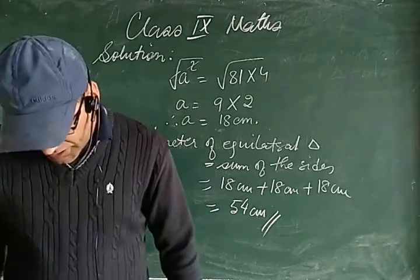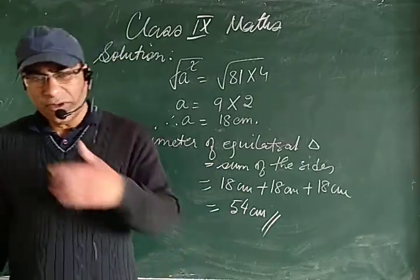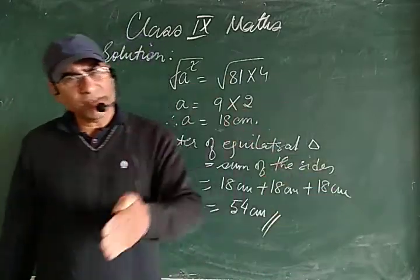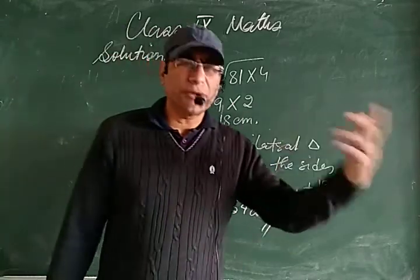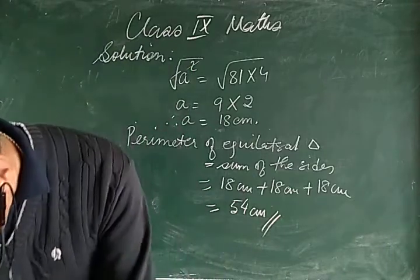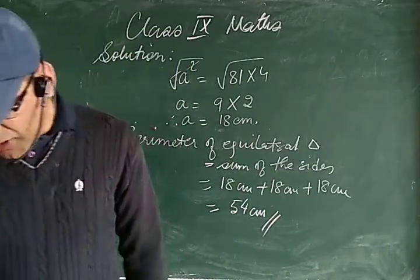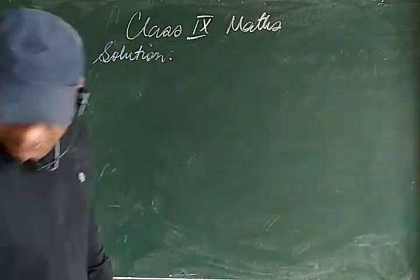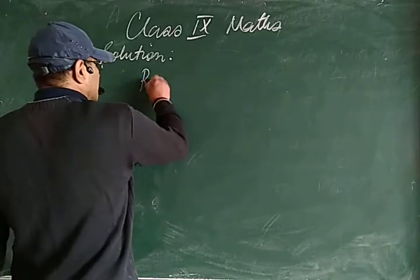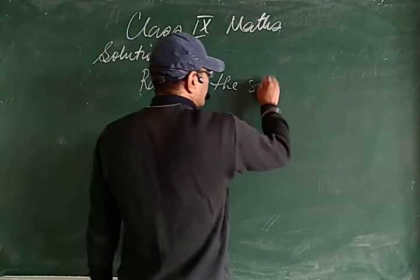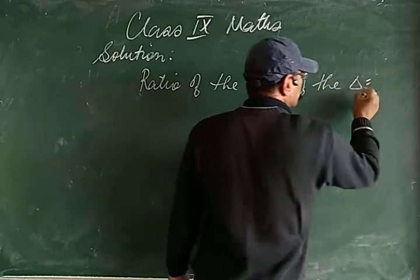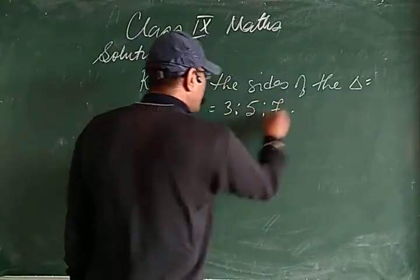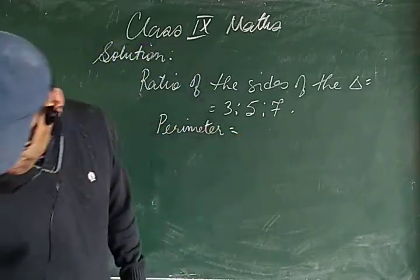There are also questions where sides may not be given directly — sometimes the area is given and you need to find the side first, then the perimeter; or the perimeter is given and you find the area. Another type: the sides of a triangular plot are in the ratio 3:5:7 and the perimeter is 300 meters.